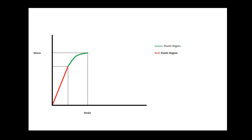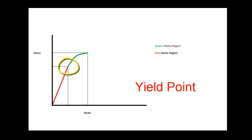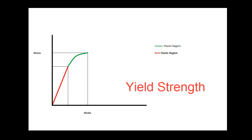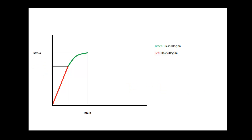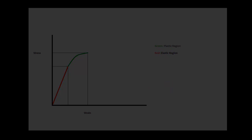The point on the graph where the deformation shifts from elastic to plastic is called the yield point. The yield strength is the stress that is required to cause plastic deformation. By convention, we define plastic deformation as a permanent strain of over 0.2%.